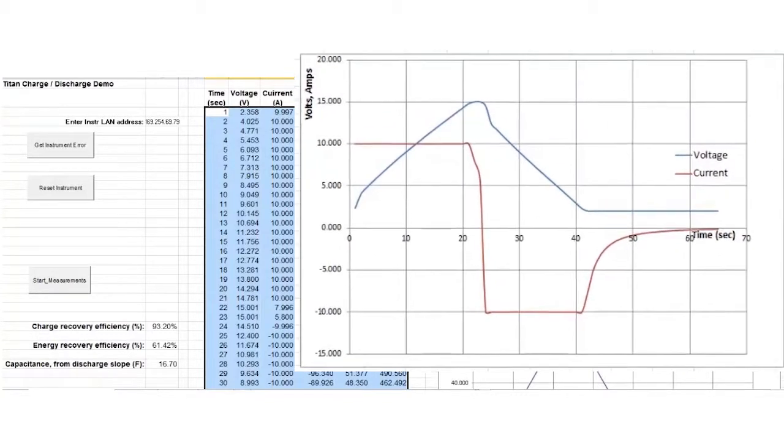In the plot at the top you can see we have volts and amps on the y-axis and time on the x-axis. Volts in blue and amps in red.